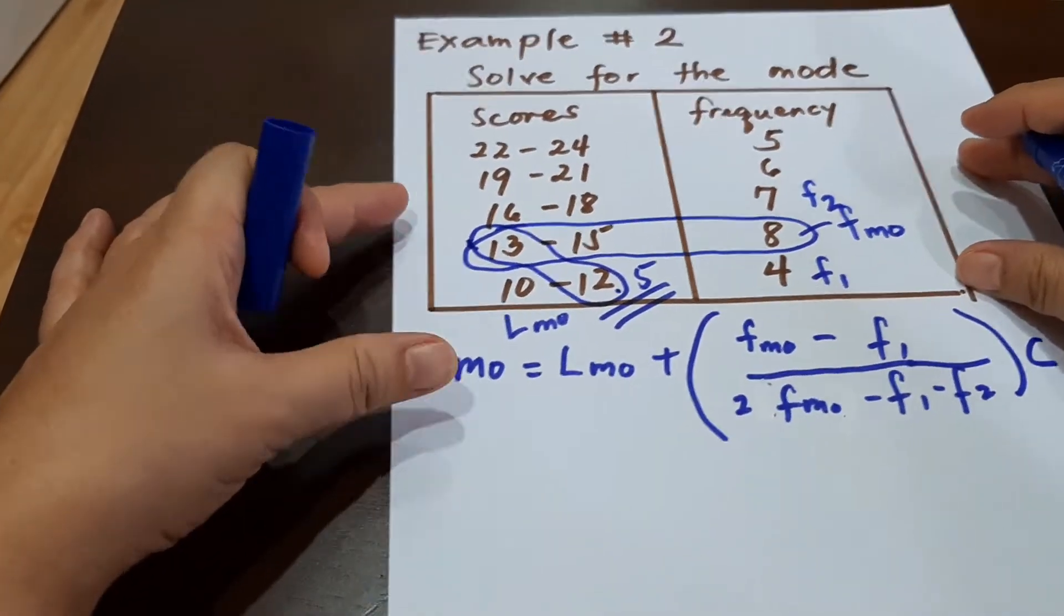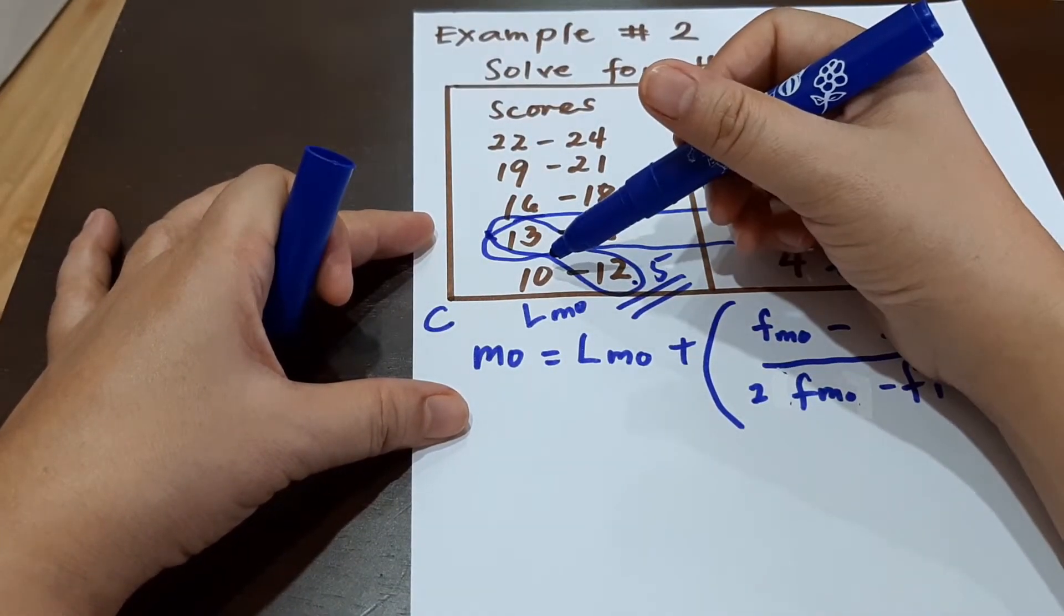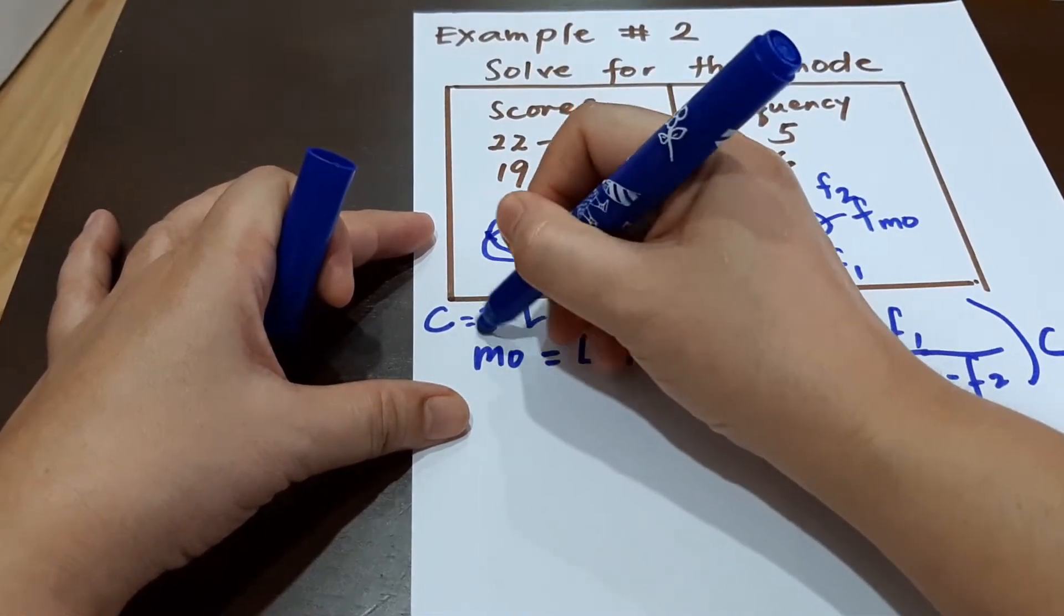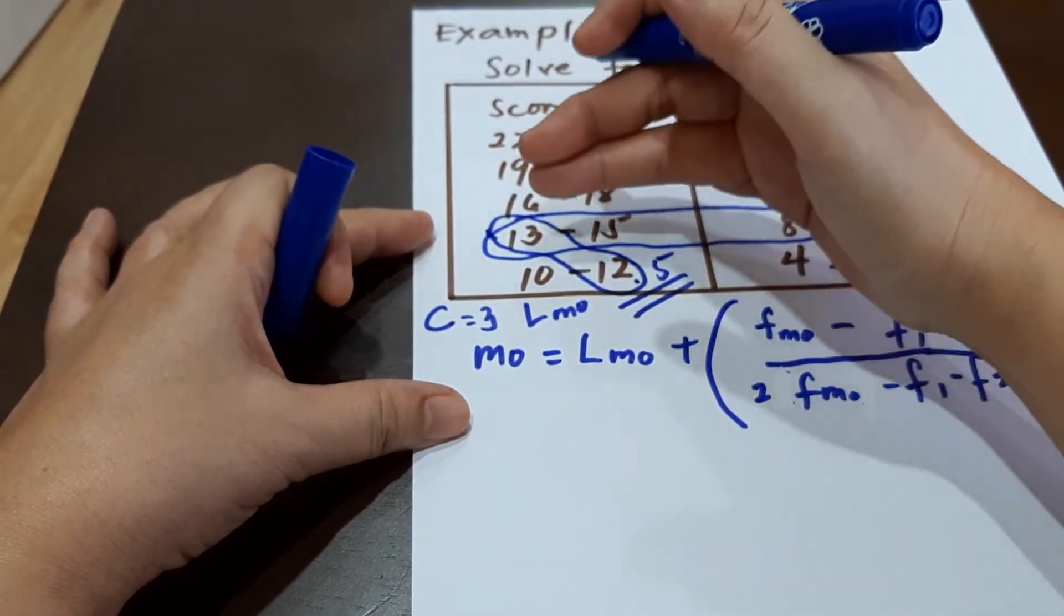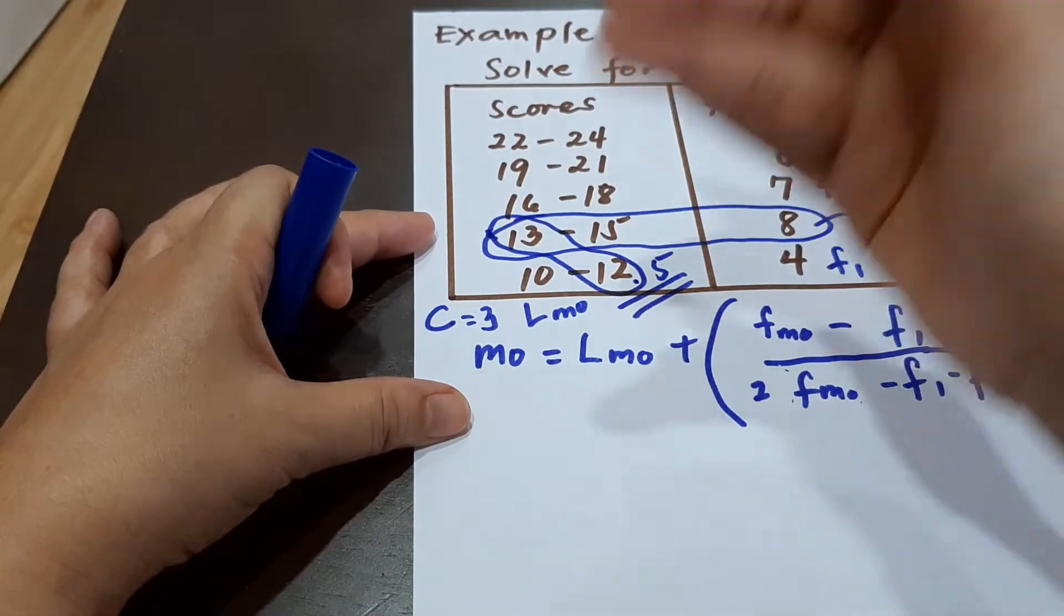And our interval is—12 minus 10 is 2, plus 1 is 3. So the interval from each class or each set of scores is 3.